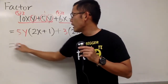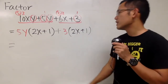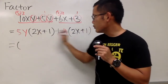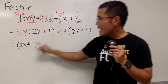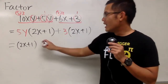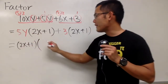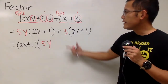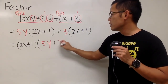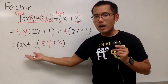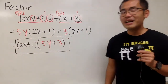Now, have a look — this parenthesis and that parenthesis are the same. In that case, we are going to factor that out. So we put 2x plus 1 all the way in the front. For the first part, we took the (2x+1) out, so we have 5y left. For the second part, we have plus 3 left. So the final answer is 2x plus 1 times 5y plus 3.